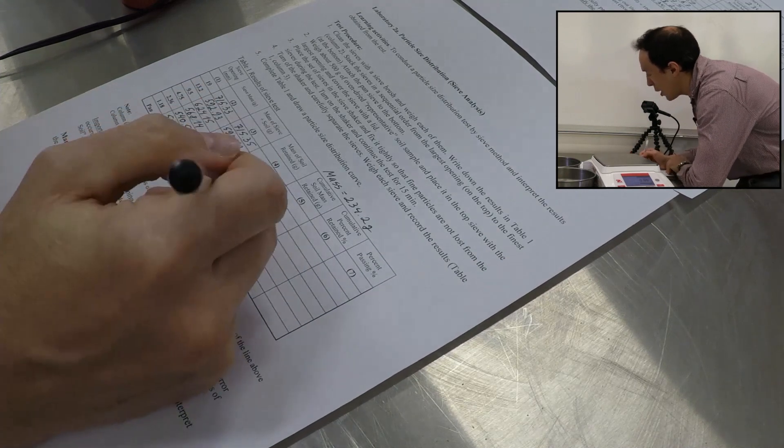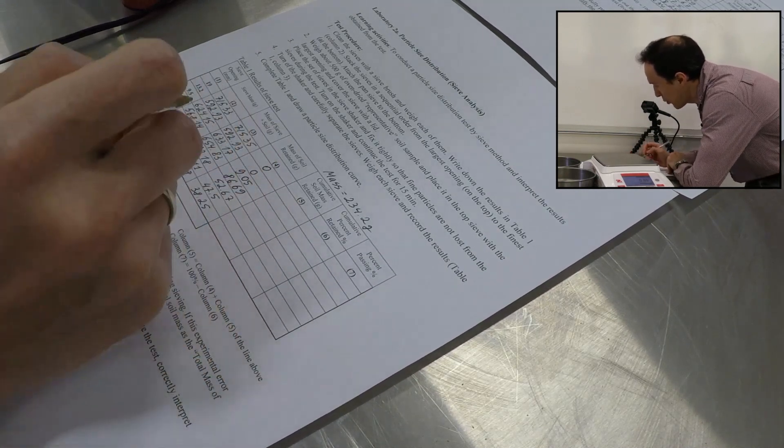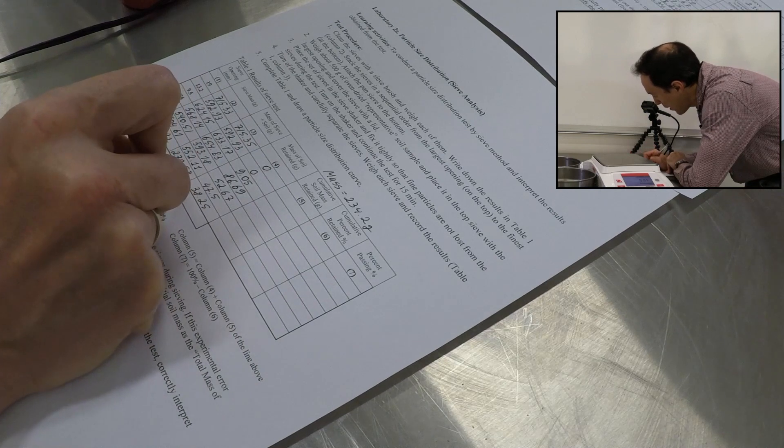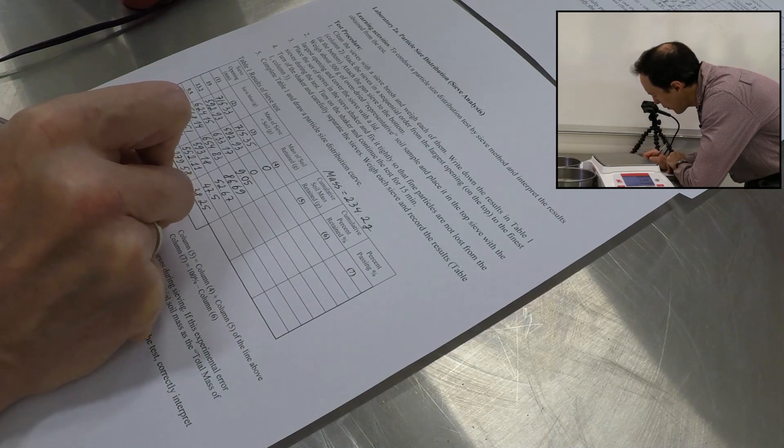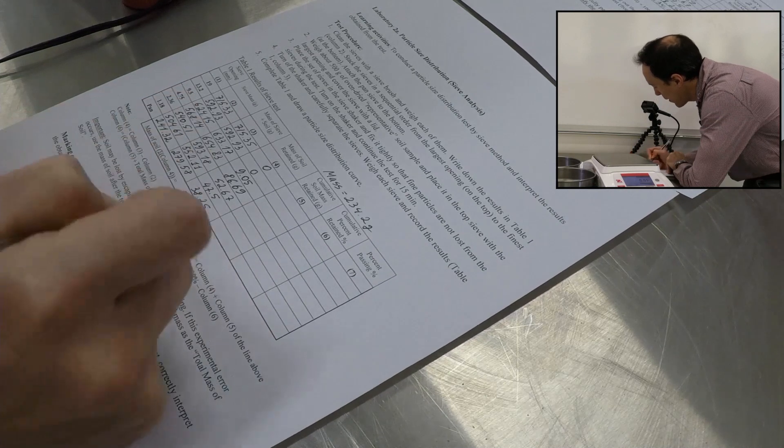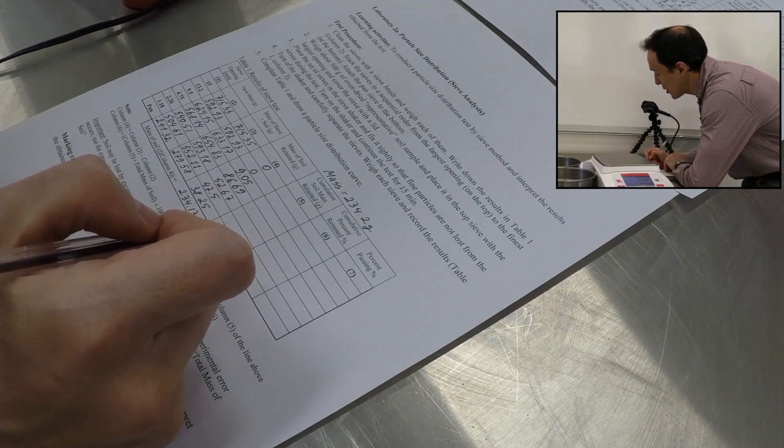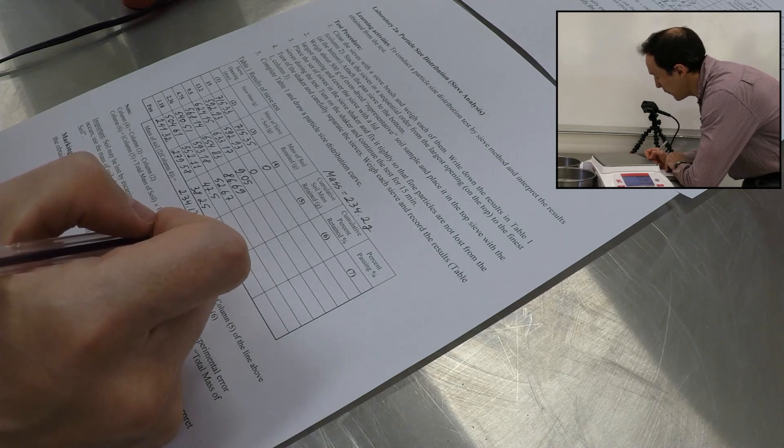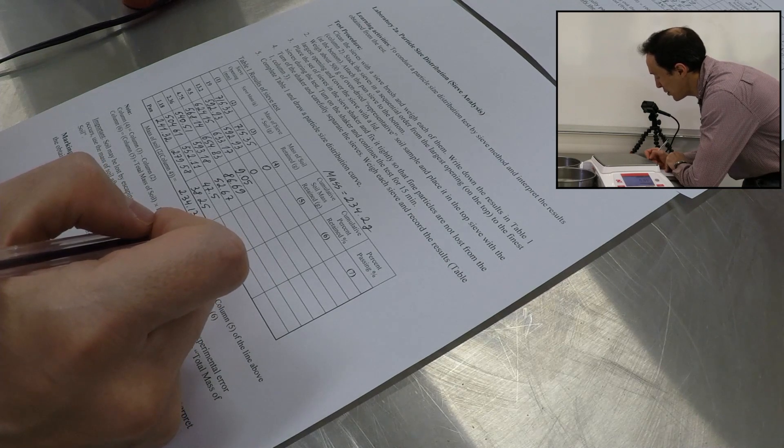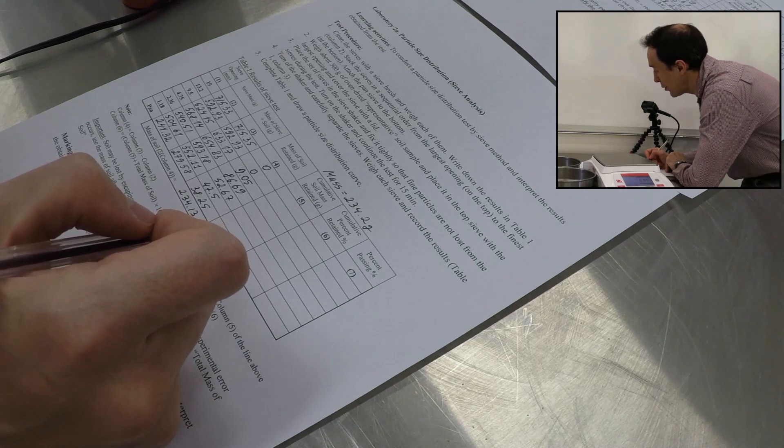So if we sum it up, we're going to get the total mass of the soil and it's 234.13, which is very close to the soil, to the mass of soil that we started with. The difference is only 0.07 grams, which is allowed by the standard. So we're fine.